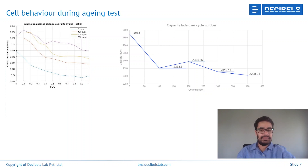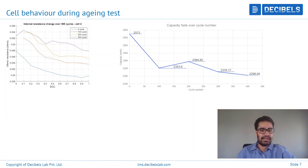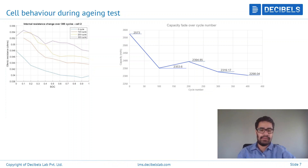Coming to the cell's behavior during aging — on the right side you can see the graph corresponding to capacity fade, showing how much capacity is lost over the complete set of cycles. In this sample, there are 400 cycles, and this cell has reached its end of life by the time 400 cycles have been completed. You can see how capacity deteriorates over the complete 400 cycles. On the left-hand side, you can see how the resistance changes over the period of 300 to 400 cycles — the resistance goes on increasing as the cell ages. This same set of tests can also be extended to drive cycle and dynamic stress tests at different ambient temperatures.